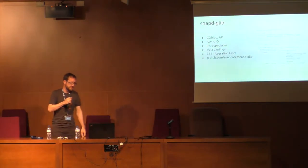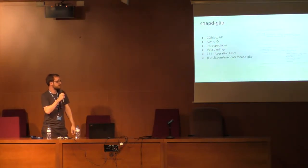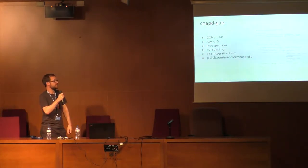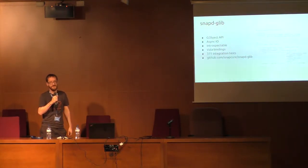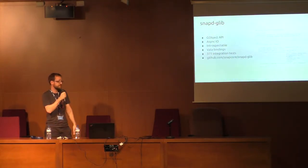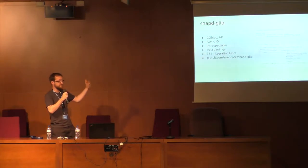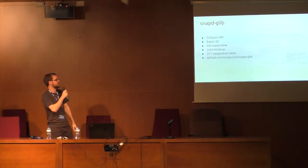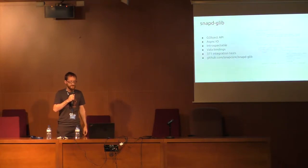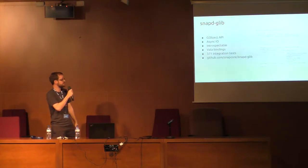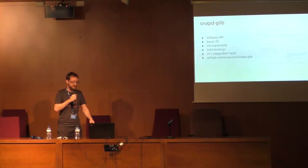One of the things I wrote is snapd-glib, a library that wraps up all the SNAP interactions in a GNOME-friendly way. Because SNAP is designed for embedded systems, it doesn't use DBus and has very light requirements. It wraps things up with GObject and async calls, is introspectable so you can use Python and JavaScript, has Vala bindings, and includes 371 integration tests at last count — and is heavily tested. It's on GitHub.